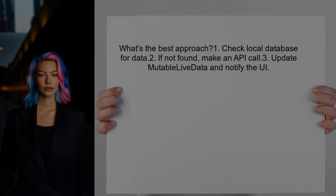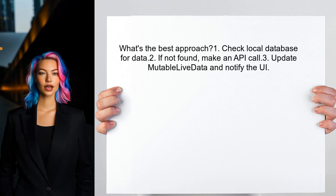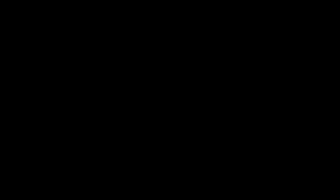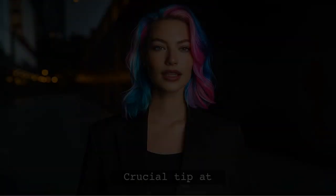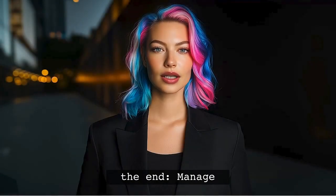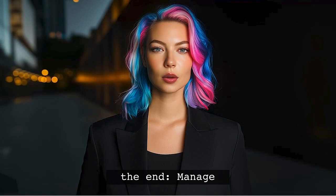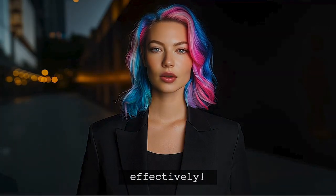What's the best approach? You want to start by checking your local database for data. If it's not there, then you can make an API call to fetch it. Once you have the data, you can update your mutable live data and notify the UI. I have a crucial tip at the end that will help you manage your live data updates more effectively.